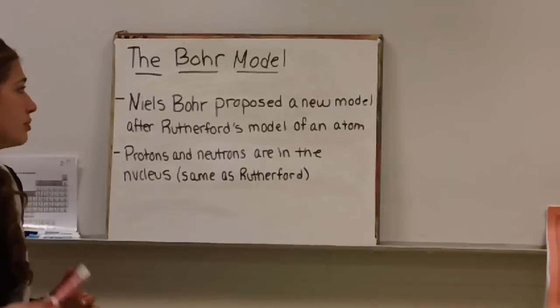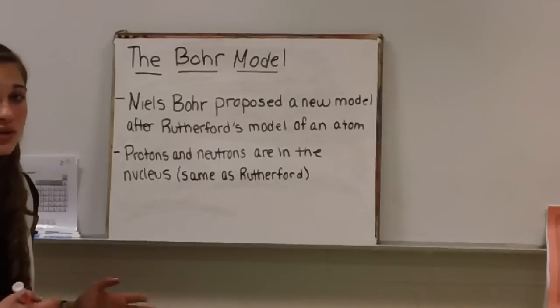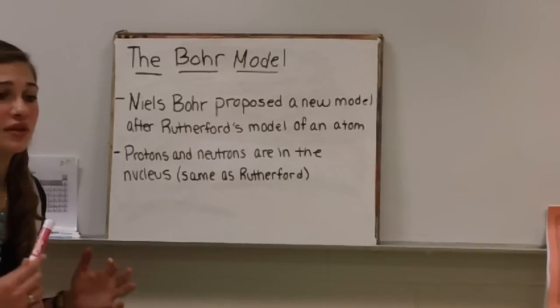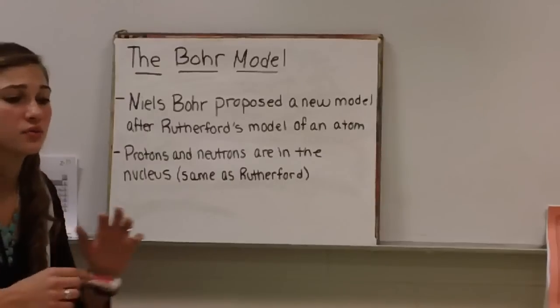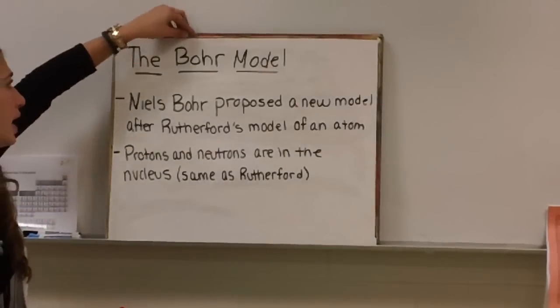Bohr proposed a new model after Rutherford's model. Basically, Rutherford's model said that protons and neutrons were in the nucleus, which Bohr agrees with. But Rutherford believed that electrons were just circling all over the nucleus, but Bohr had a new theory.